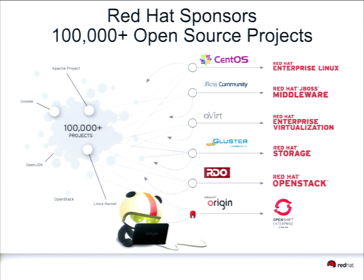The thing about Red Hat is that we're an open source company. We sponsor over 100,000 different projects, so we touch just about every aspect of your life — everything from the cloud to CentOS and Fedora. For every commercial product, there's an open source counterpart. Folks at DrupalCon are probably all running something that Red Hat has resources or support in — Pantheon is running on Fedora, Acquia is running Gluster for storage.